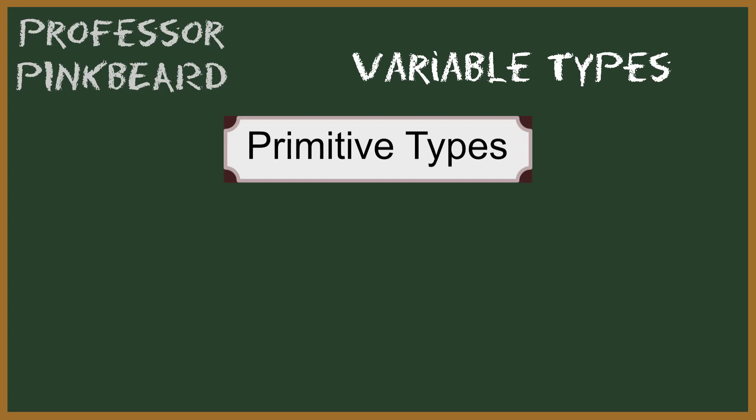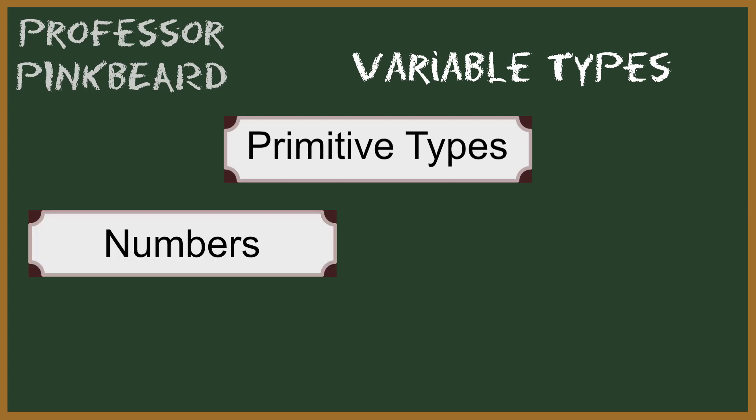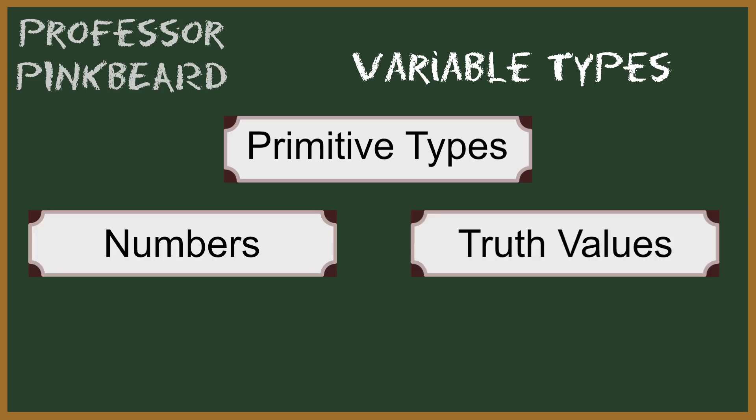The primitive data types are generally broken down into two types: numbers and truth values. There is an additional type called a character, but at its core, a character is nothing more than an integer data type that we've assigned a character value to — it is still a number.